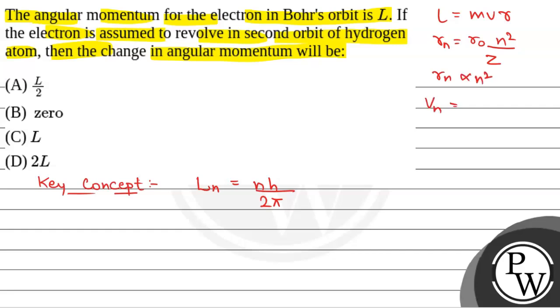And v in nth orbit is equal to v0 into z by n, i.e. v in nth orbit is inversely proportional to 1 by n. So, L in nth orbit will be directly proportional to n, where L is the angular momentum in nth orbit.